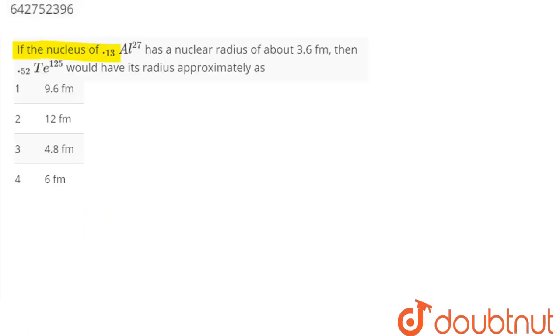The nucleus of 13-27 aluminum has a nuclear radius of about 3.6 femtometer. Then 52-125 tellurium would have its radius approximately as. We know radius of a nucleus is given by the formula